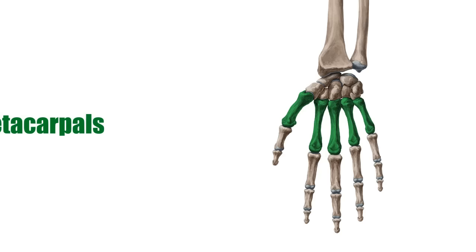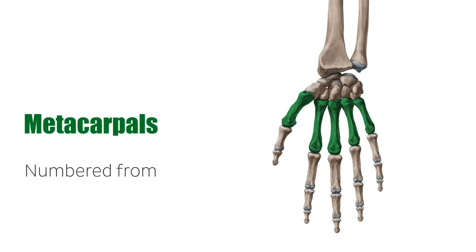The metacarpals connect the wrist with the fingers and are numbered from medial to lateral based on the finger or phalanx they connect with. So the one proximal to the thumb is the first metacarpal, the index finger is the second metacarpal, the middle finger is the third metacarpal, the ring finger is the fourth metacarpal, and the pinky is the fifth metacarpal.